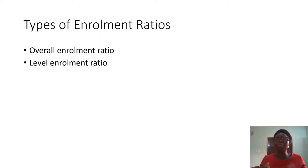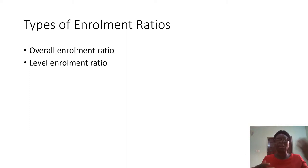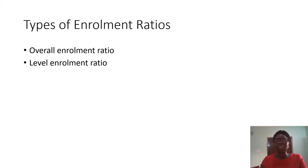We also have the level enrollment ratio. This one classifies according to the different levels of education. In Nigeria, we have three levels of education: primary, secondary, and tertiary. We want to know what percentage of the population is enrolled at the primary level, secondary school level, and the tertiary level — the higher institution.